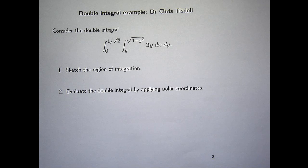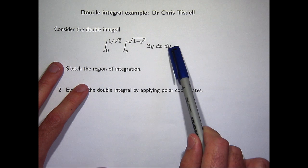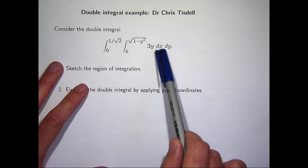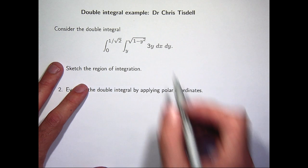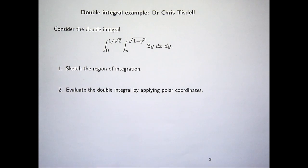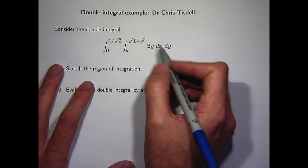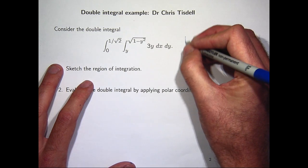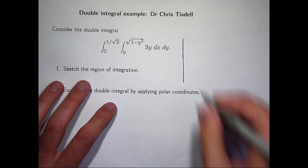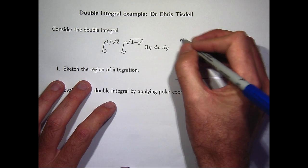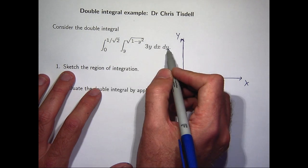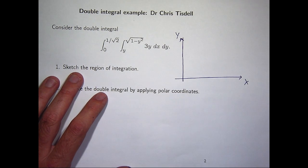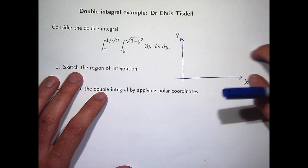We're asked to sketch the region of integration. Looking at the limits of integration and the way the differentials lie, x will be between y and root 1 minus y squared, and y will be between 0 and 1 half. What I like to do is sketch the bounding curves for the region and then determine the region of integration. So let's look at y equals 0 and y equals 1 on root 2 — they're just two parallel lines.